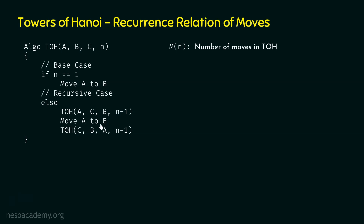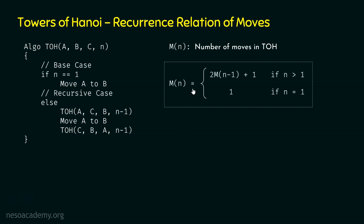Why plus 1? Because we are performing one move here. So the recurrence relation is: m(n) = 2·m(n−1) + 1, if n > 1; and m(n) = 1, if n = 1. There will be only one move if there is just one disk. This is the recurrence relation of moves of Towers of Hanoi.